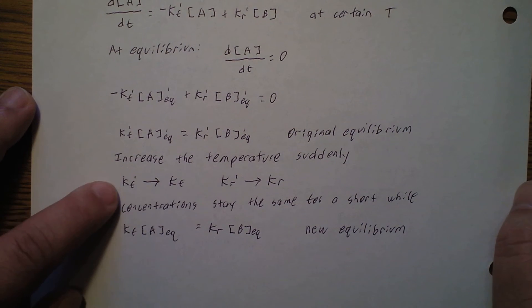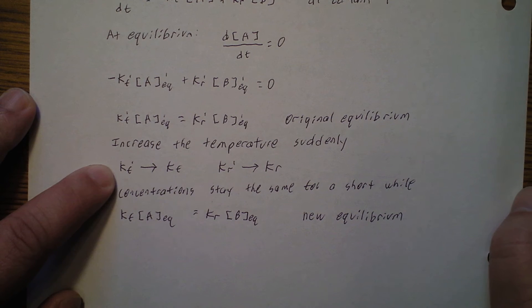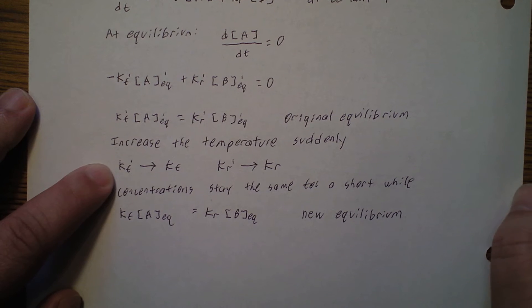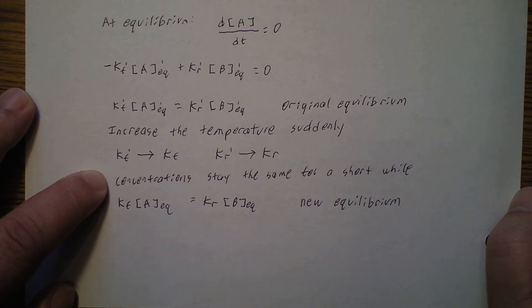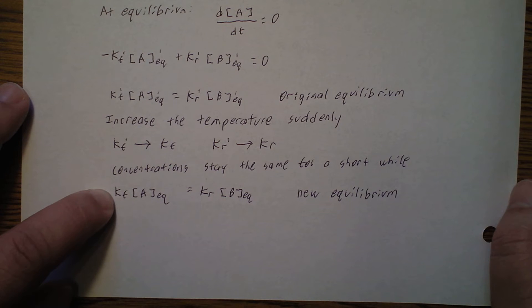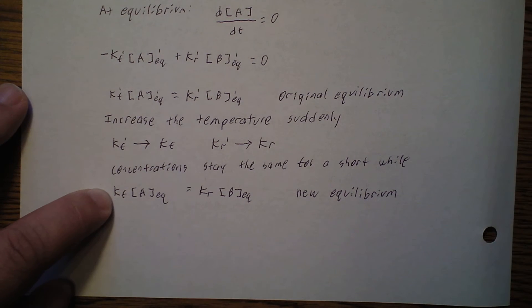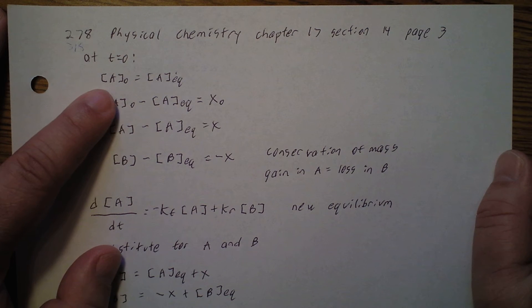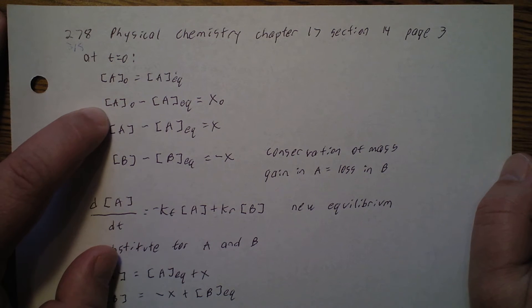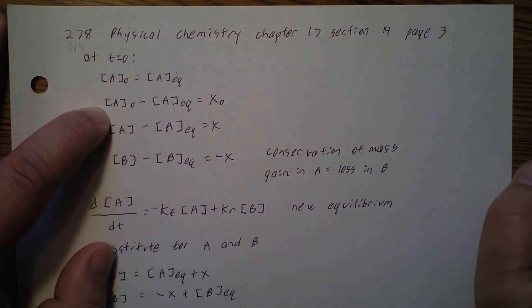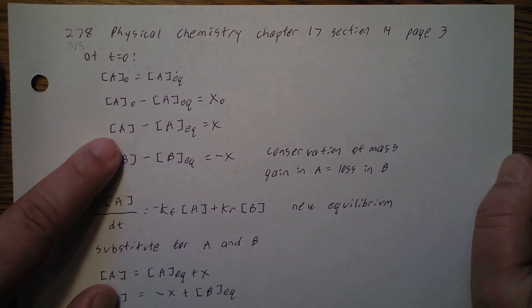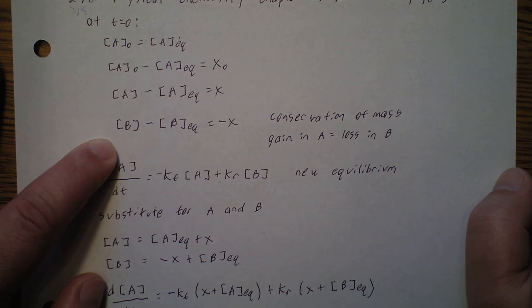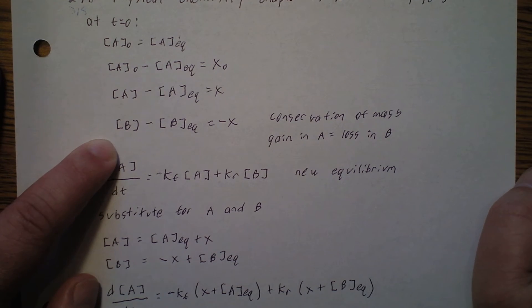Now we increase the temperature suddenly by adding energy. Afterwards, instead of Kf' and Kr', we have Kf and Kr. For a short time the concentrations stay the same, so Kf[A]eq = Kr[B]eq at the new equilibrium. At time zero, [A]₀ equals [A]eq'. We define x₀ = [A]₀ - [A]eq, and x = [A] - [A]eq. Then [B] - [B]eq = -x, because whatever we gain in A equals the loss in B.